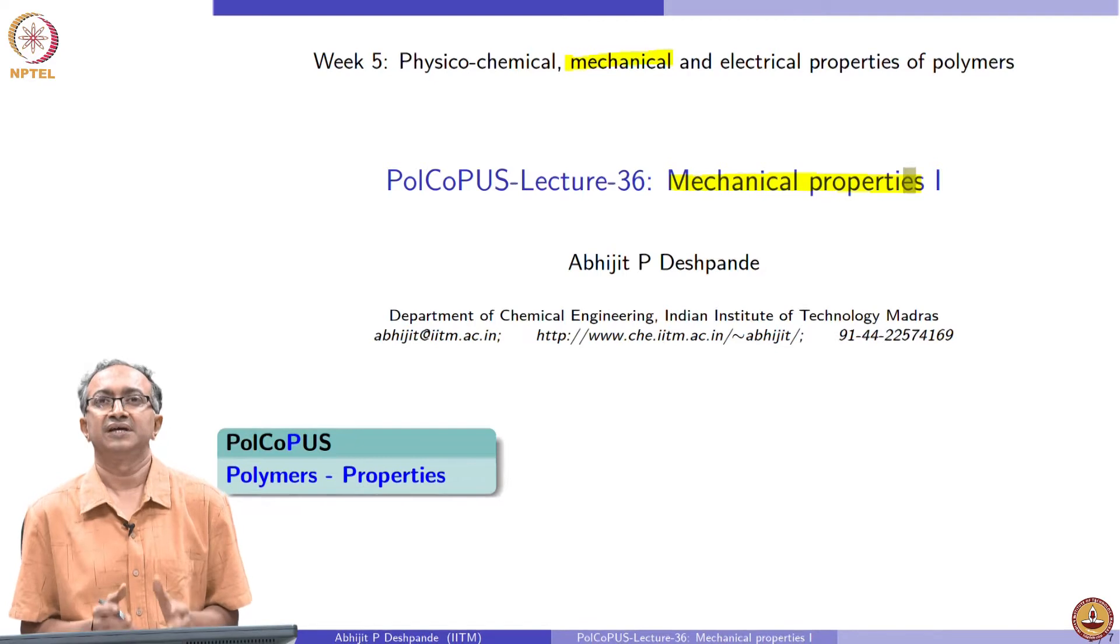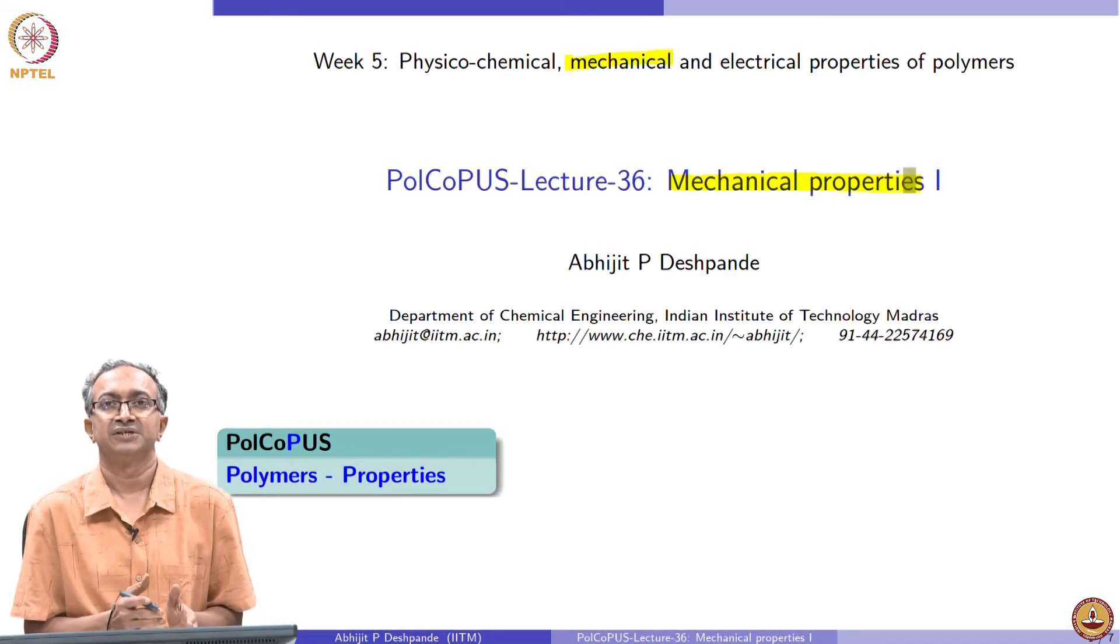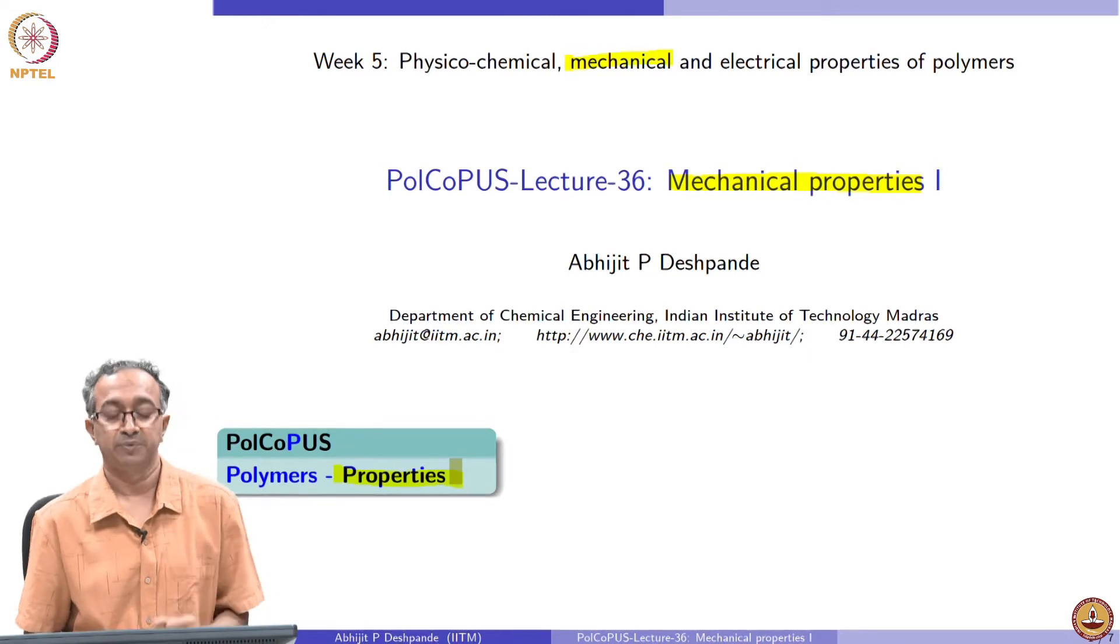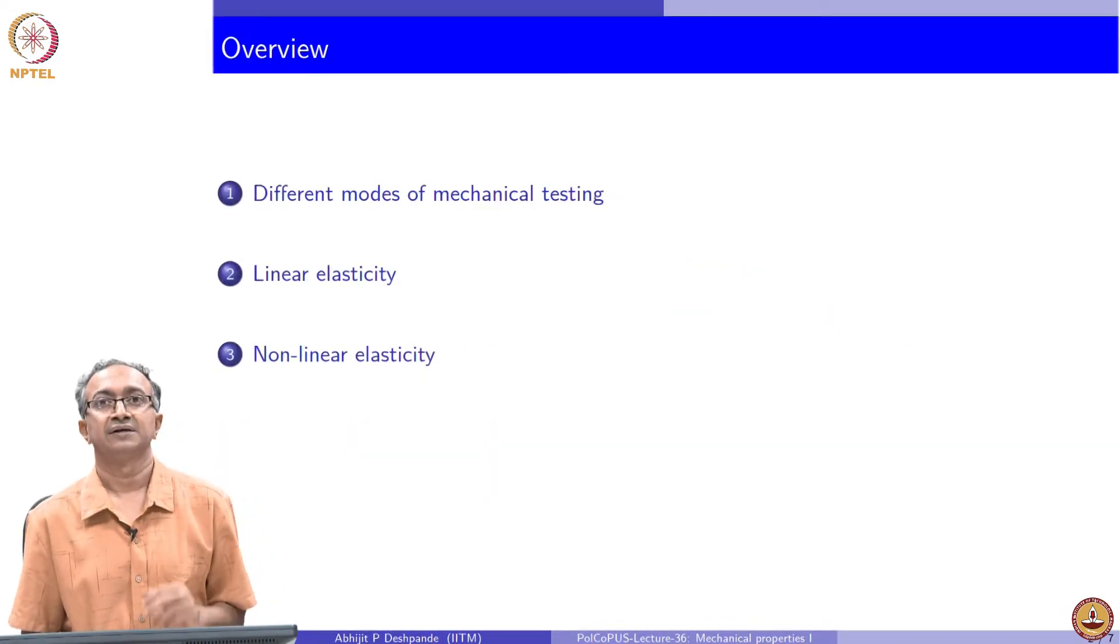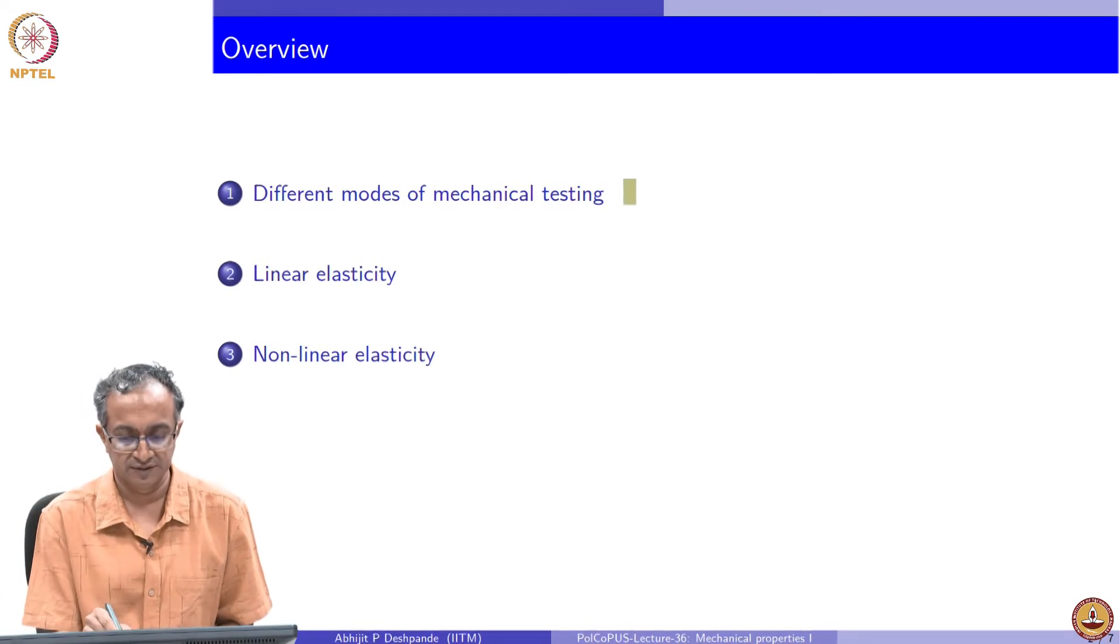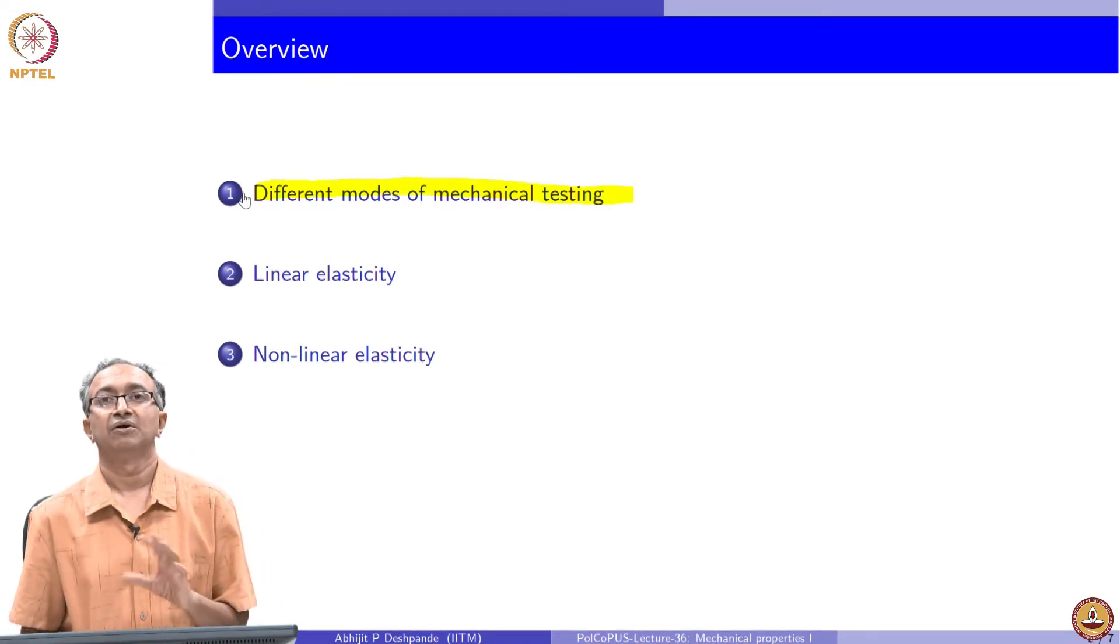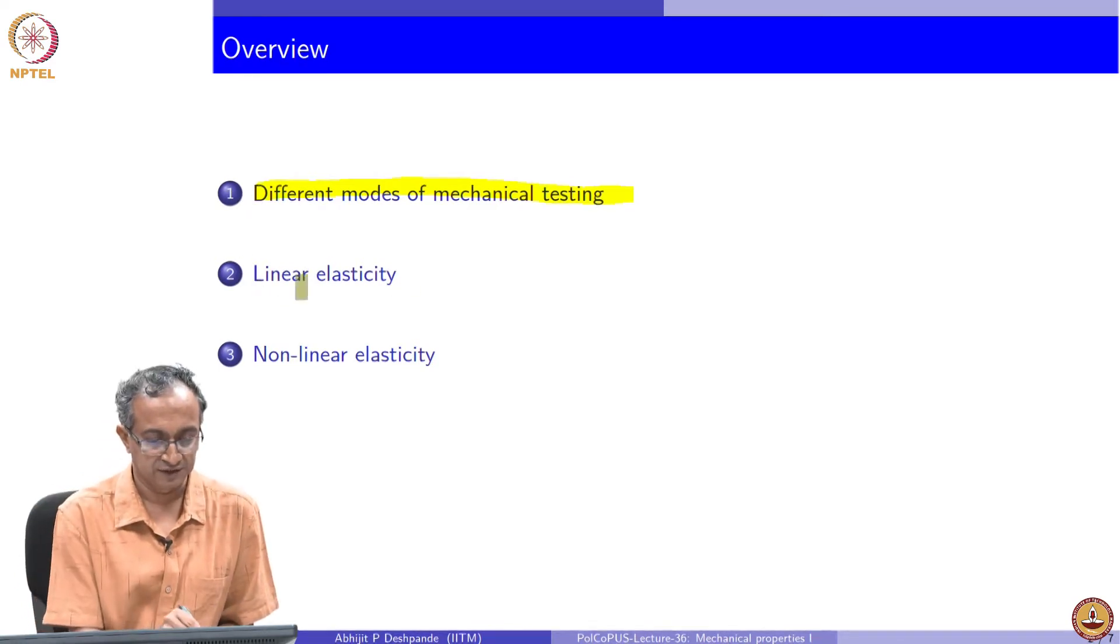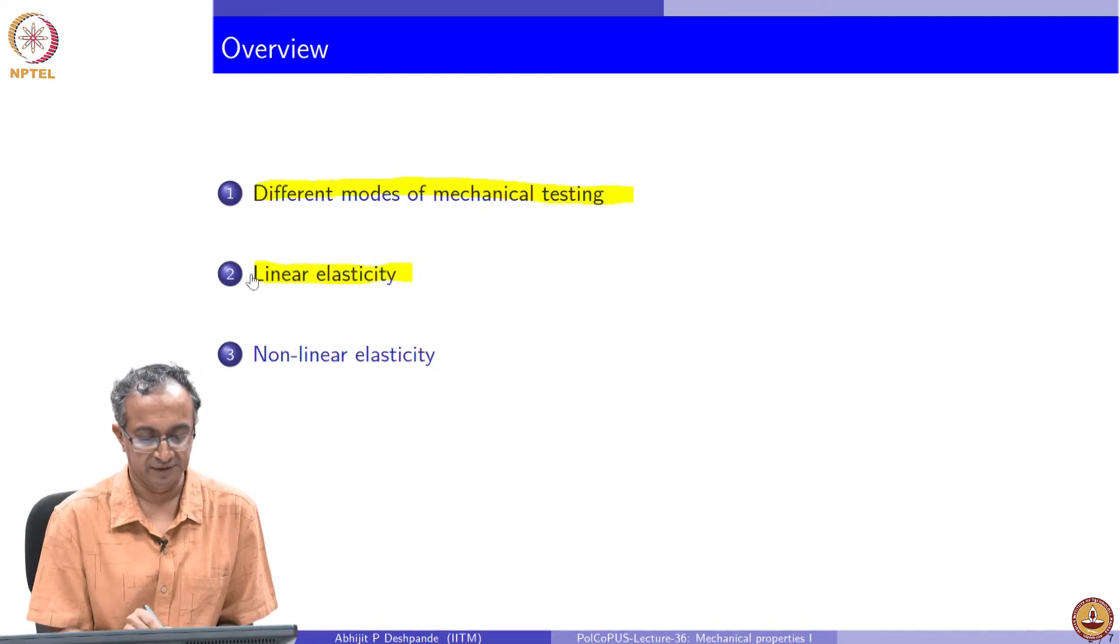In this lecture, let us look at the elastic behavior, which is at small deformation for all materials. But we have also seen that for rubber like materials, elastic deformation can be present for very large deformations. We will look at both of these from the point of view of properties of polymeric materials. This will be done by first quickly summarizing different modes of mechanical characterization, and then we will look at small deformation elastic behavior or large deformation elastic behavior.